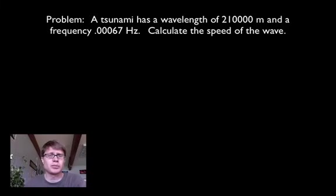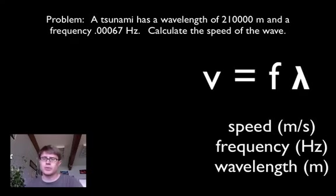Last thing I want to show you is that you can solve simple problems. And so let's say this is a real world example. Let's say we have a tsunami which is a giant wave in the ocean created by an earthquake. Let's say it has a wavelength of 210,000 meters. So that's 210 kilometers between waves. That's a huge wavelength. And let's say it has a frequency of 0.00067 hertz. That would be like one wave coming every 25 minutes. Now calculate the speed of the wave.